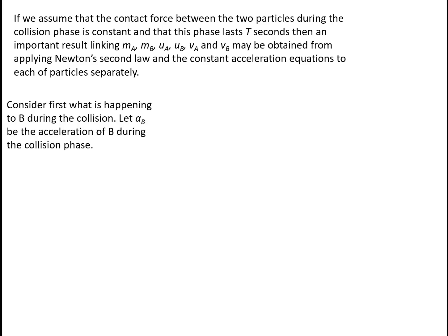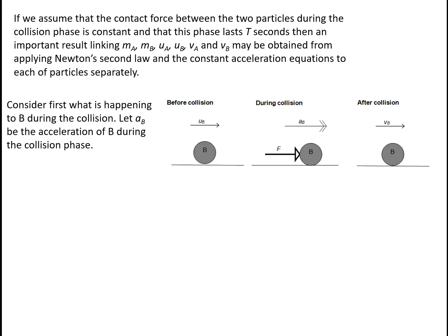Let's consider first of all what's happening to particle B. Before the collision, particle B is moving to the right with a velocity of uB. During the collision, particle B is experiencing a push — a force F from particle A — and this is going to be producing an acceleration which we define to be aB. After the collision, B will be moving with velocity Vb.